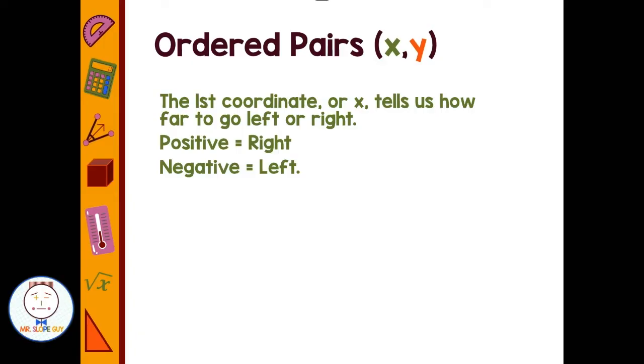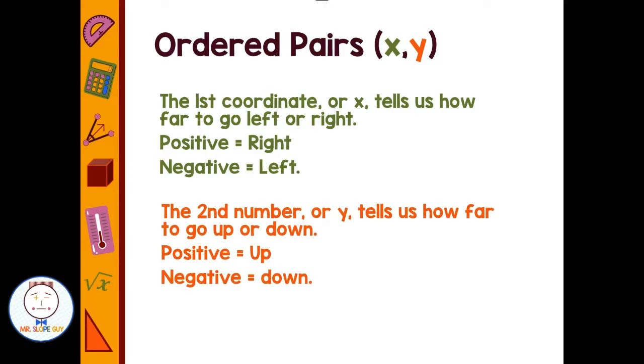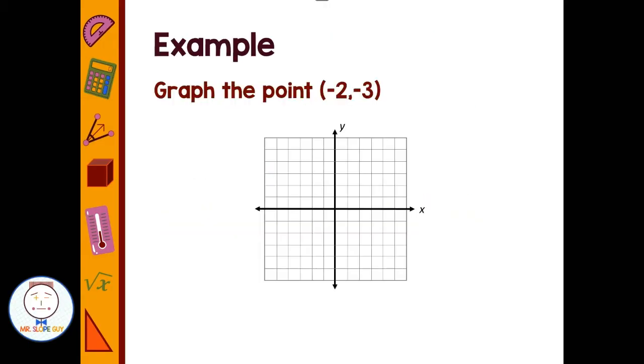The second number, or y, tells us how far to go up or down. If it's positive we go up, negative we go down.